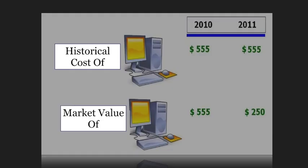For example, a computer purchased in 2010 at a cost of $555 — that is its historical cost. Even if the current market value is $250, we will still show it in our books of accounts at $555 minus any applicable depreciation.